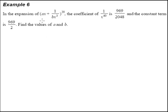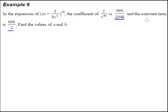For example 6, in this expansion, the coefficient of 1 over x to the power of 4t is given as this monster-looking fraction, and the constant term is, again, another monster-looking fraction. What we're supposed to do is find a and find b. This is going to be quite a difficult, rather tedious question, so please pay attention. The video is going to be pretty long. So first of all, what do we understand about the constant term?